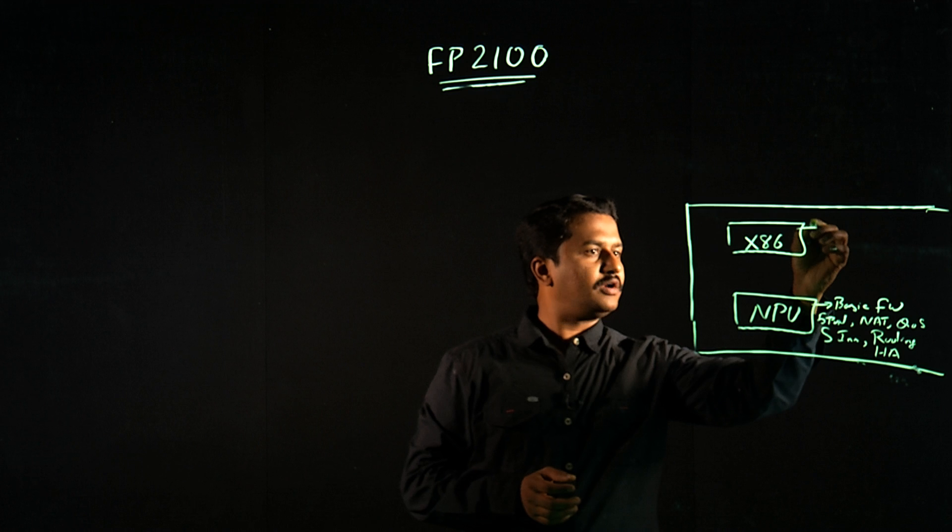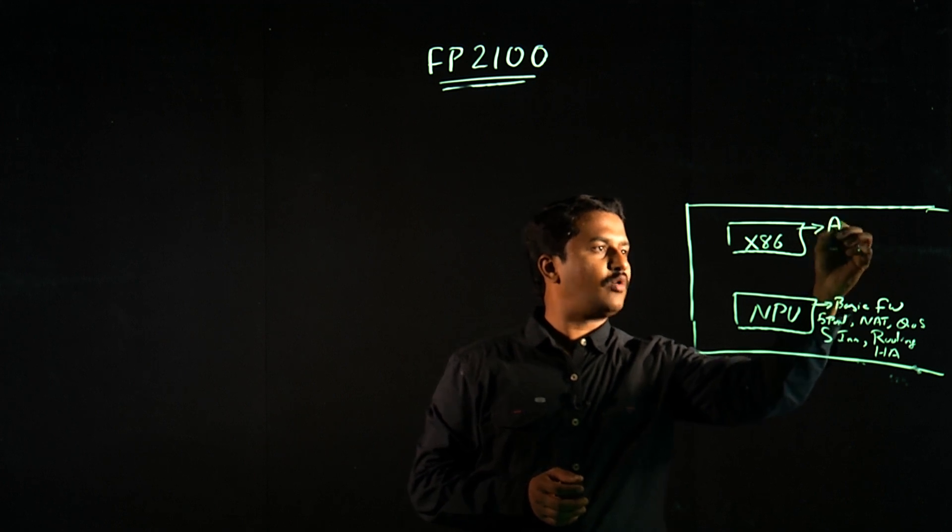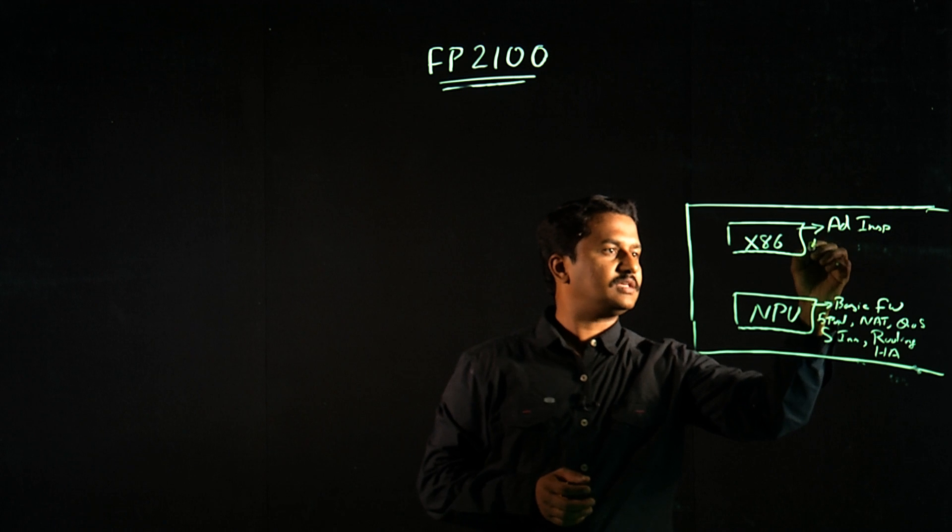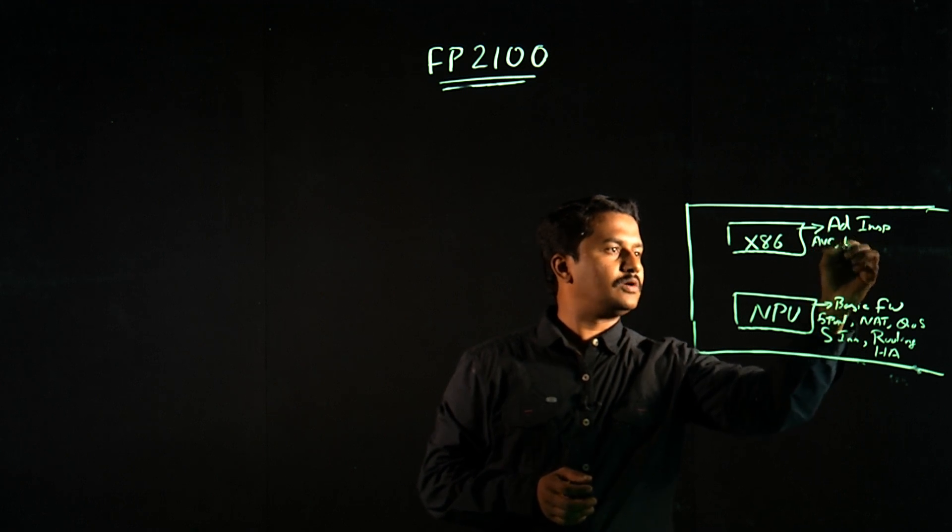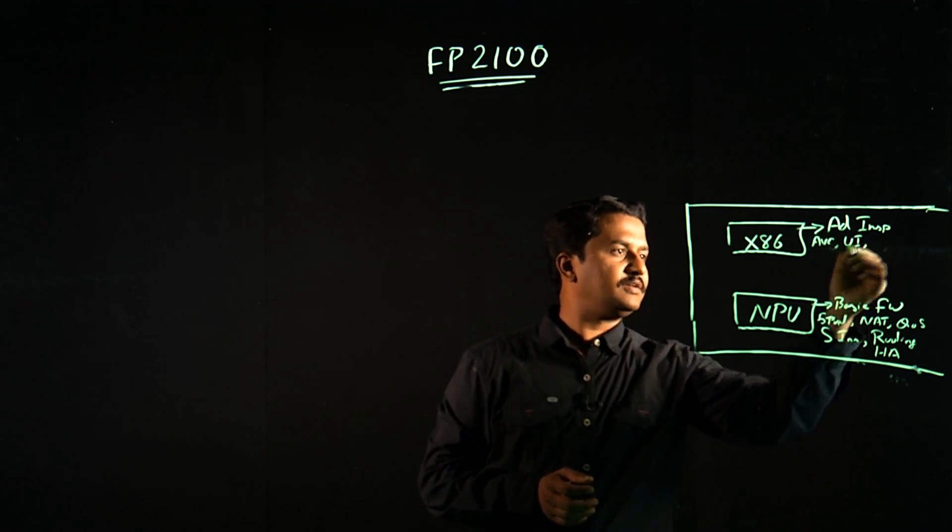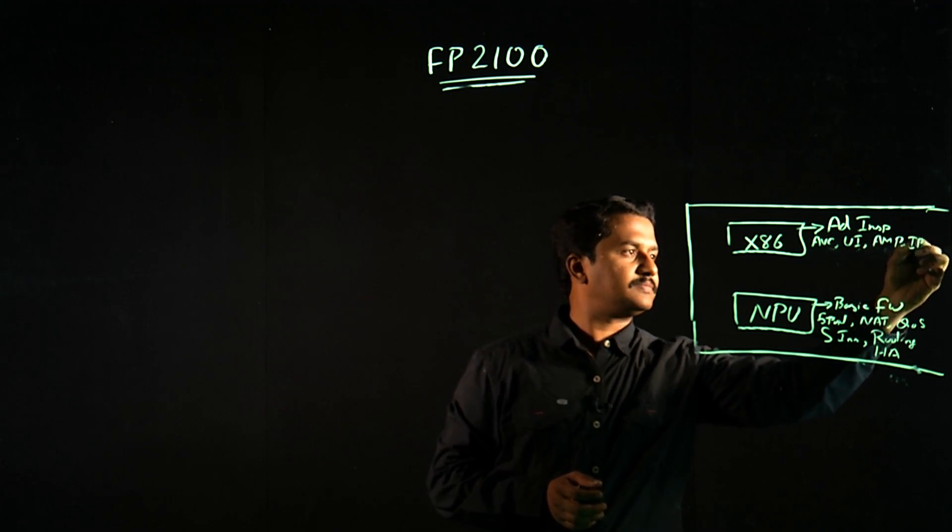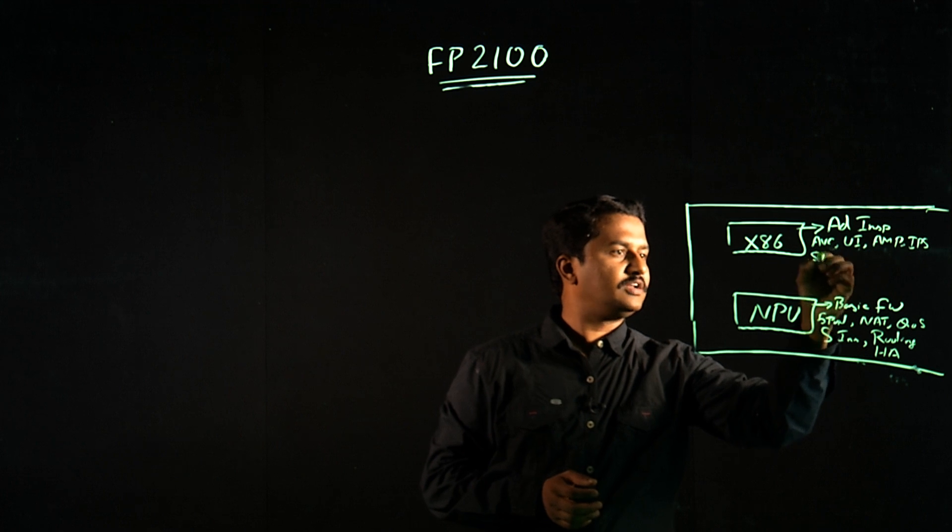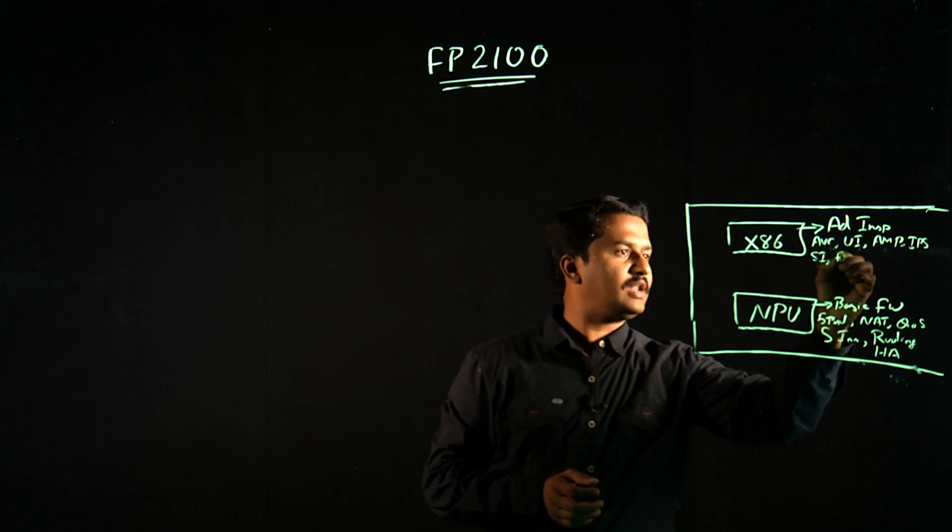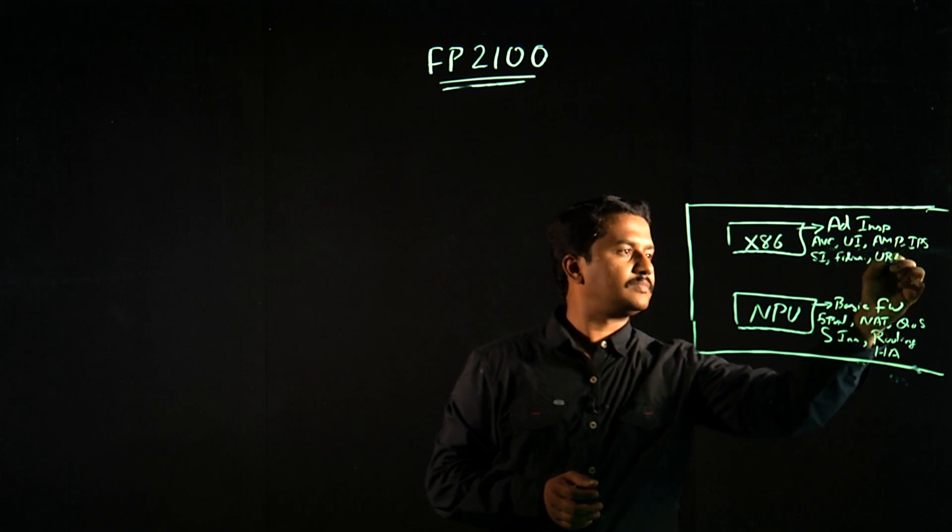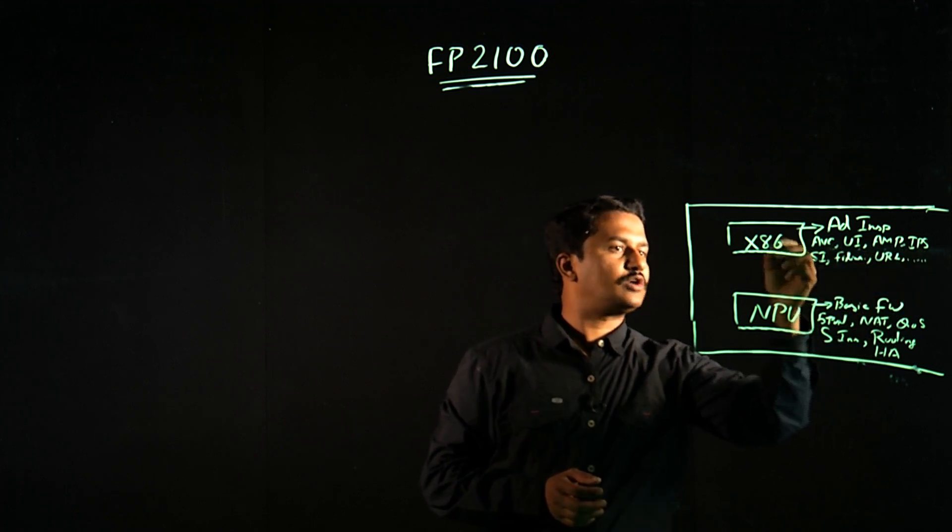On the other hand, on X86, we have advanced inspections such as AVC, user identity, AMP, IPS, security intelligence, file inspection, URL, all advanced service runs on this X86.